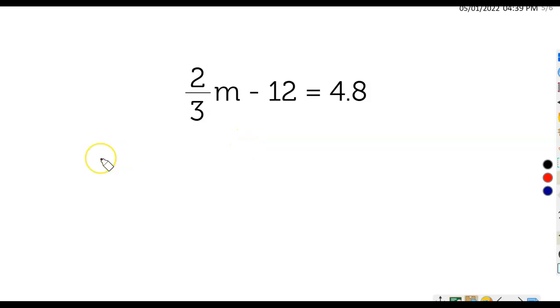This one's a little more complex. So go ahead and pause right here, work this out, and then we'll see how you did. Alright, well, my variable is m. My variable term is right here, 2 thirds m. So I want to undo the constant term first. Let's get rid of that. So we're going to add 12 to this right here on both sides.